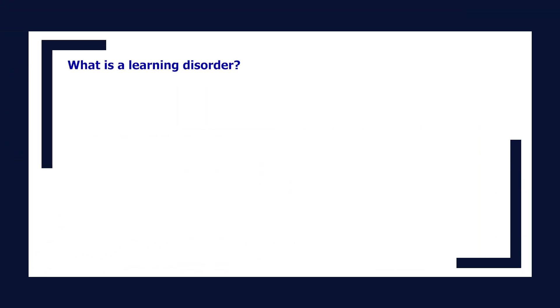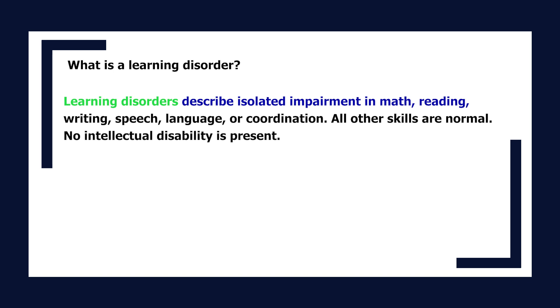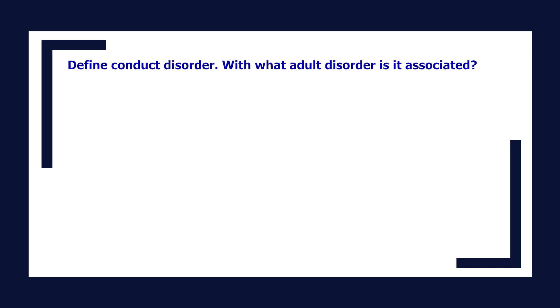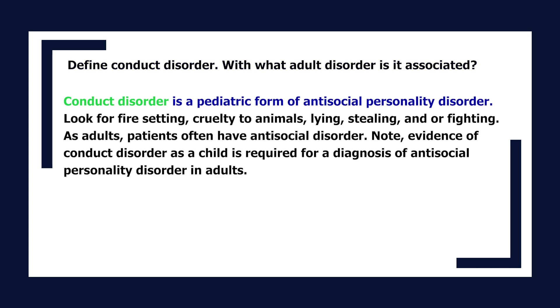What is a learning disorder? Learning disorders describe isolated impairment in math, reading, writing, speech, language, or coordination — all other skills are normal and no intellectual disability is present. Define conduct disorder and with what adult disorder it is associated. Conduct disorder is a pediatric form of antisocial personality disorder — look for fire setting, cruelty to animals, lying, stealing, and/or fighting. As adults, patients often have antisocial personality disorder. Note that evidence of conduct disorder as a child is required for a diagnosis of antisocial personality disorder in adults.